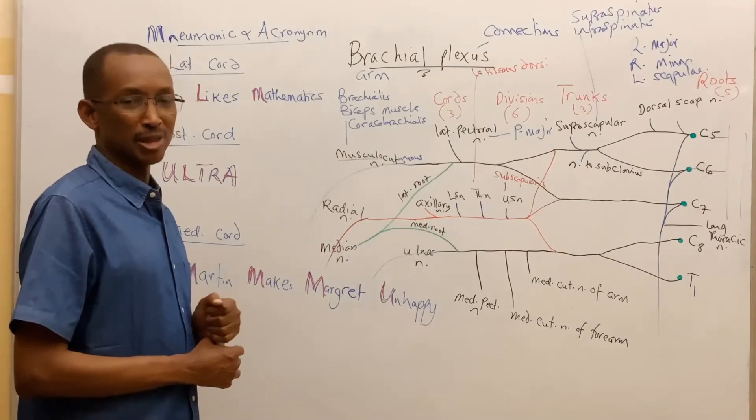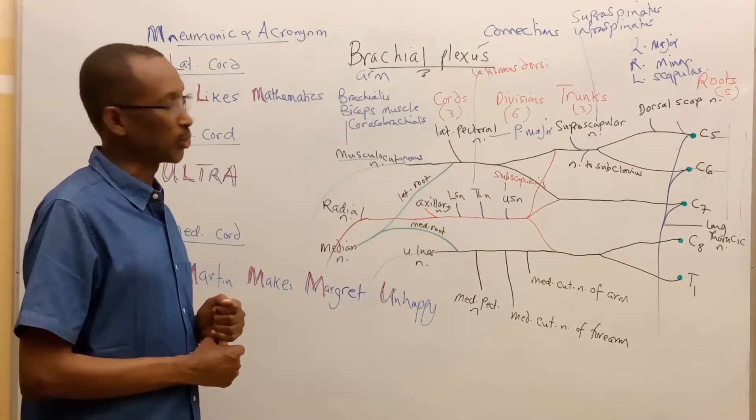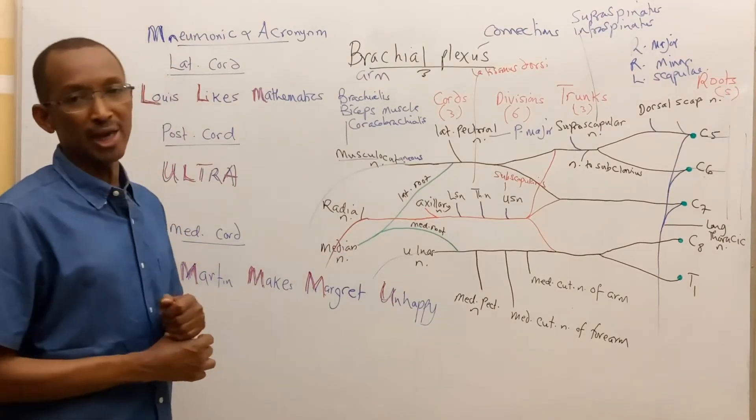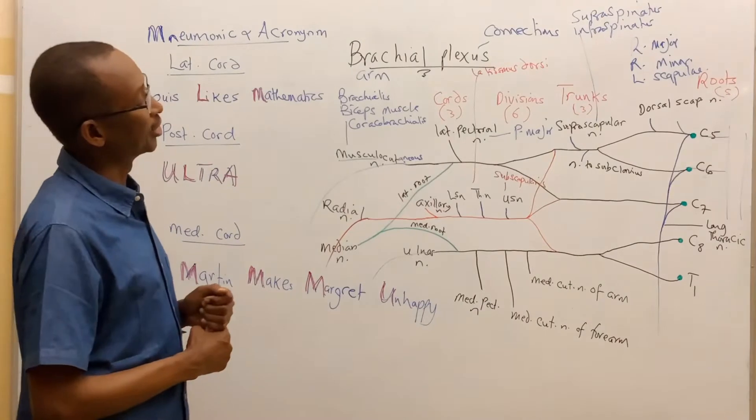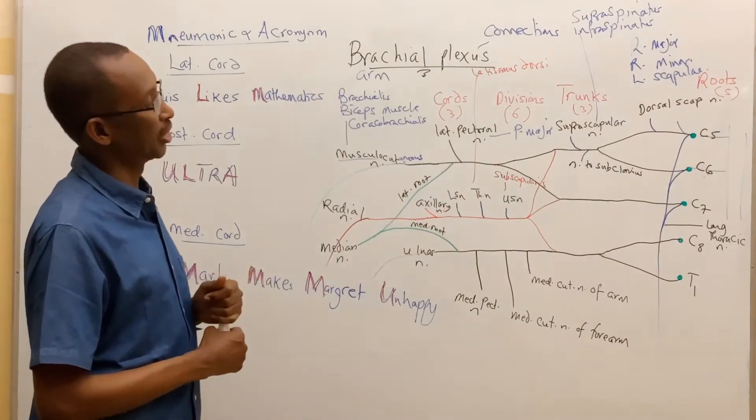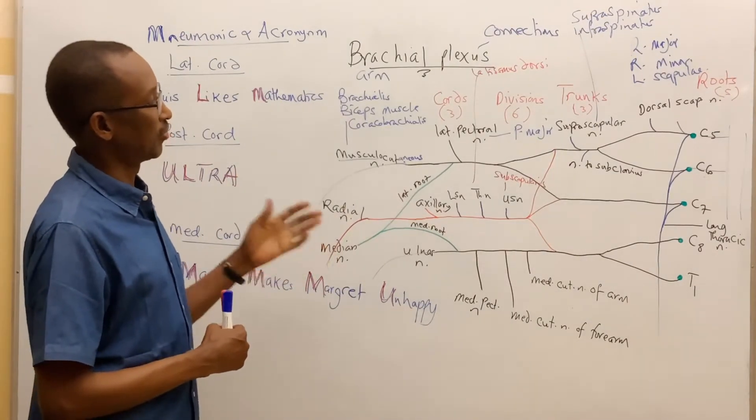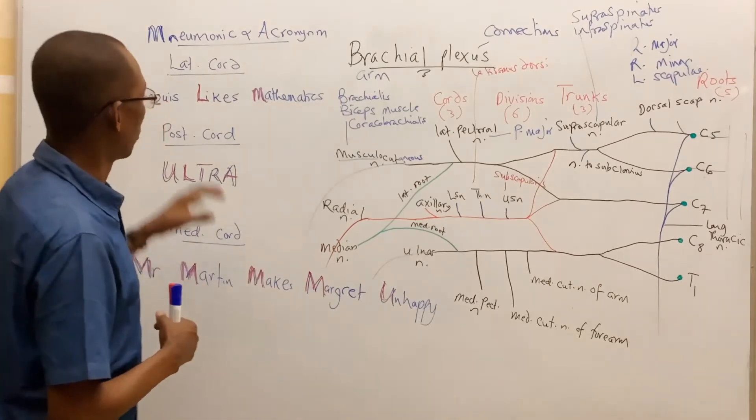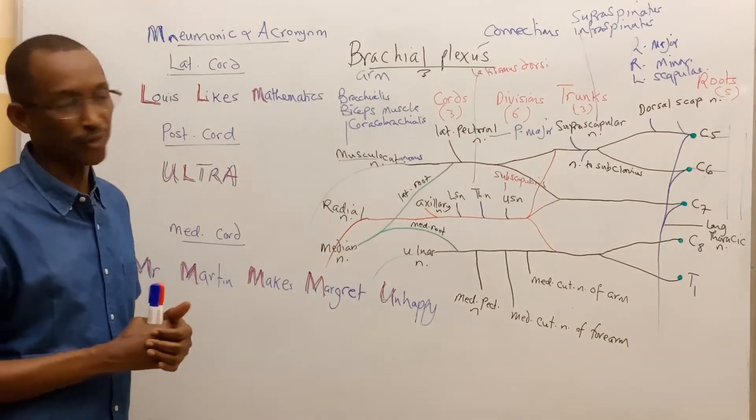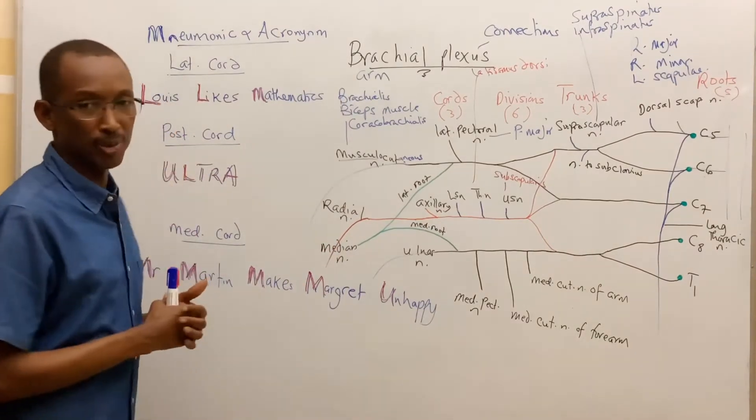Hello Lewis. Today I'm going to discuss the mnemonics and acronyms with regard to the brachial plexus. In my last video, I discussed the branches coming out from either the roots, the trunks, the divisions, or the cords. So today I'm going to discuss the branches that are coming from the cords of the brachial plexus.